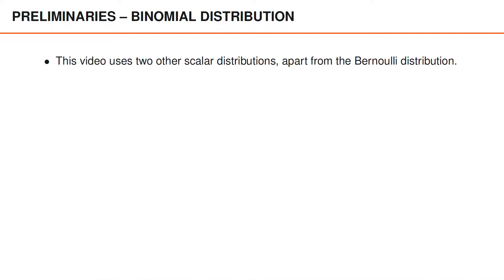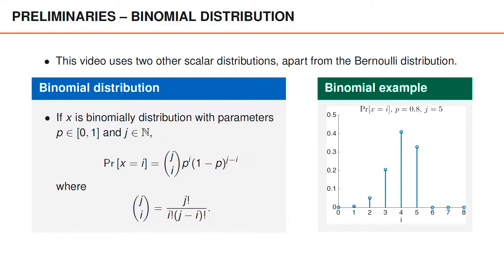To present the clutter models, it is useful to be familiar with three scalar distributions: the Bernoulli distribution, introduced in an earlier video, and two more introduced here. The first is the binomial distribution, which is closely related to the Bernoulli distribution. Imagine that we perform j independent trials, which are all Bernoulli distributed with probability p.